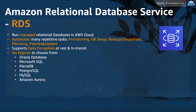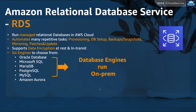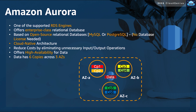Many of these names are familiar. The first five engines are databases that we used to run on-premises, and most of them already existed before there was something called cloud computing. The only exception is the last one, which is Amazon Aurora. Amazon Aurora is a cloud-native database engine, engineered from day zero to take full potential benefit of the cloud. Just remember that it's one of the supported RDS engines.